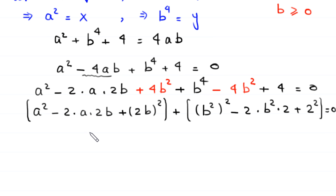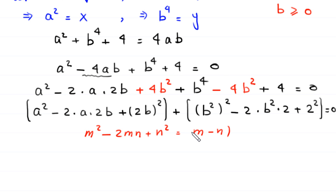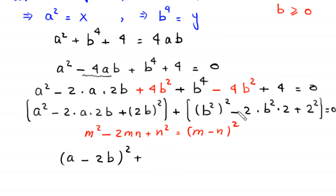Using the algebraic identity m squared minus 2mn plus n squared equals m minus n whole squared, the expression a squared minus 2a times 2b plus 2b squared becomes a minus 2b whole squared. Similarly, b to the power 4 minus 2 times b squared times 2 plus 2 squared becomes b squared minus 2 whole squared. So the equation becomes a minus 2b whole squared plus b squared minus 2 whole squared equals 0.